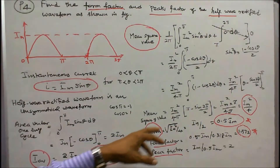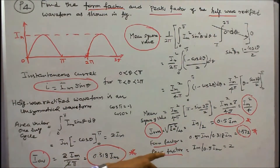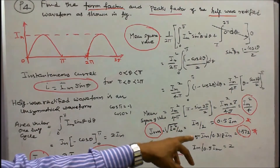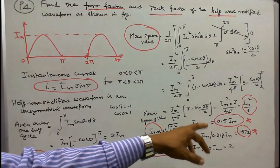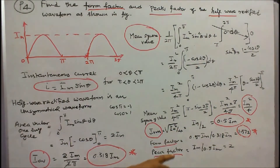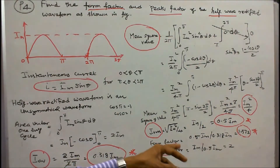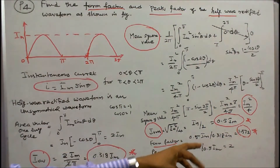With I_rms = 0.5 I_m and I_average = 0.318 I_m, form factor = 0.5 I_m / 0.318 I_m = 1.572. Peak factor = maximum value / RMS value = I_m / (0.5 I_m) = 2.